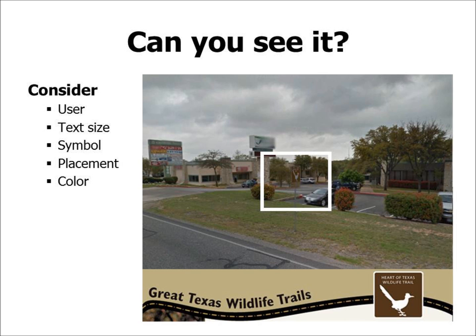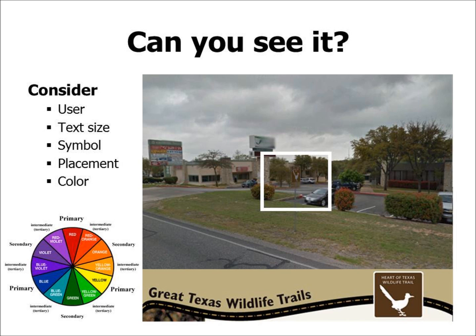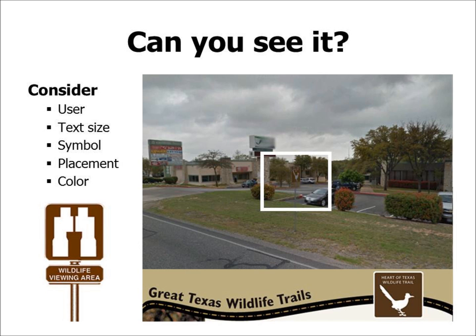A best practice when considering color for wayfinding markers is to choose colors that are easily describable. You run into problems when someone has to describe a 'brownish off-colored sign' or an 'orangish sign.' It's much better if someone can say 'the blue signs downtown guide you to the restaurants' or 'the purple signage.' Something that stands out and is unique. Here's an example of a wildlife viewing marker more appropriate for vehicles traveling at a high rate of speed — notice the large binocular symbol and much larger font.